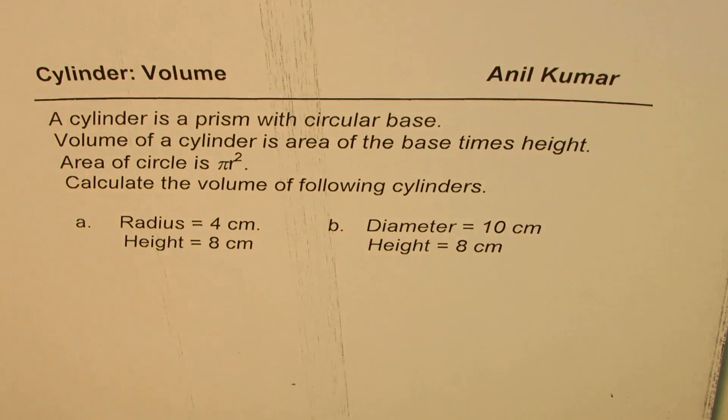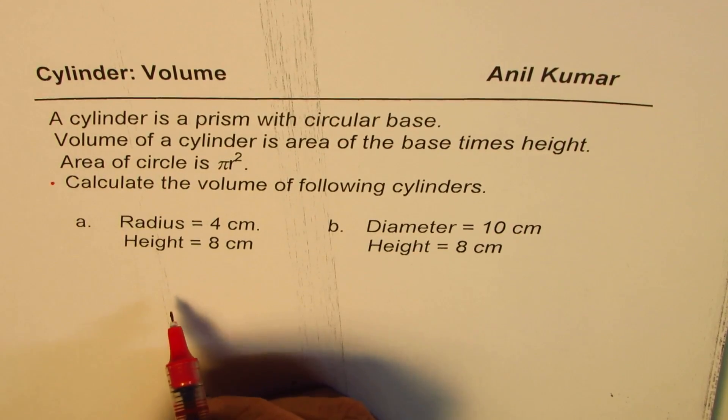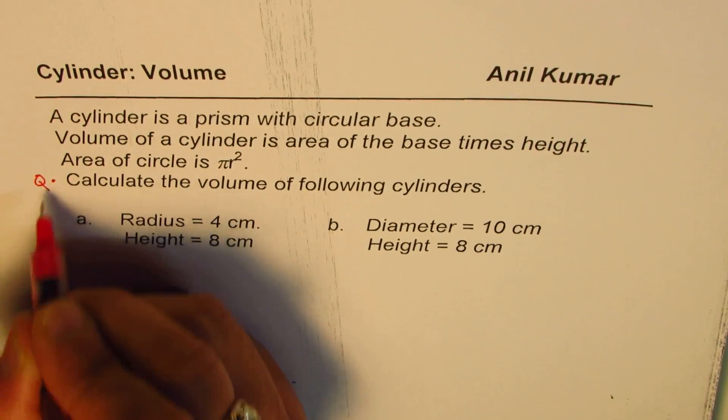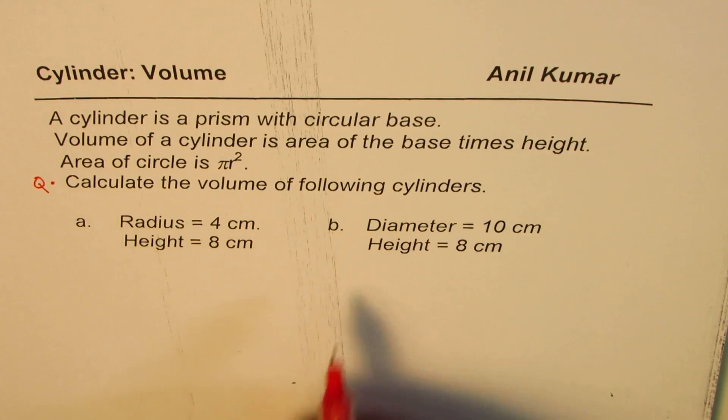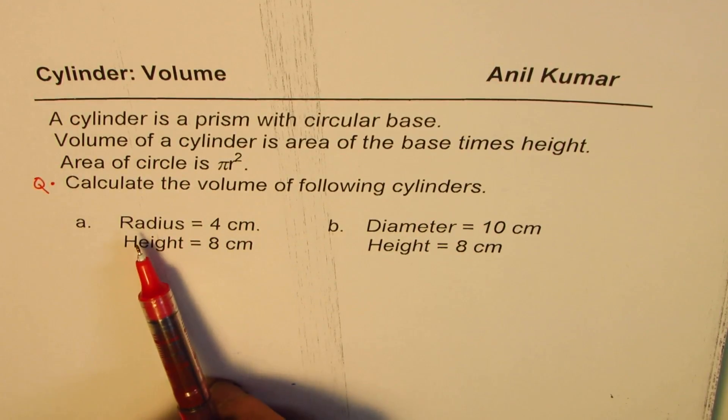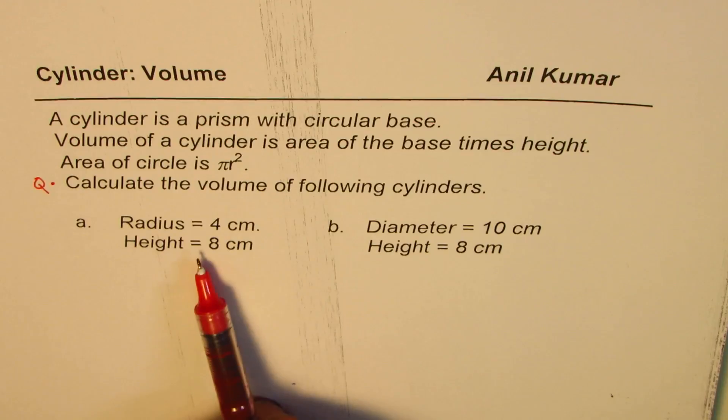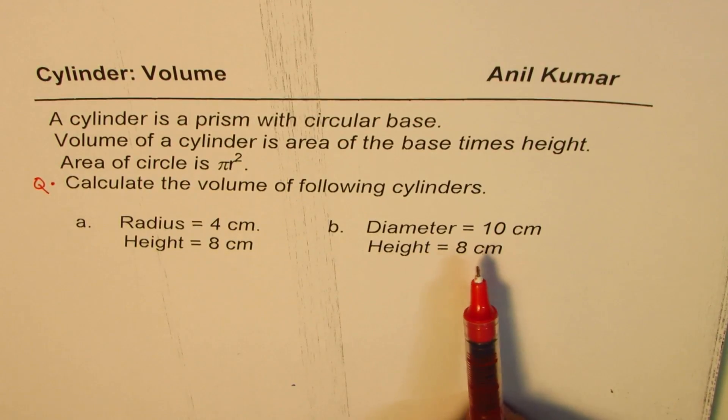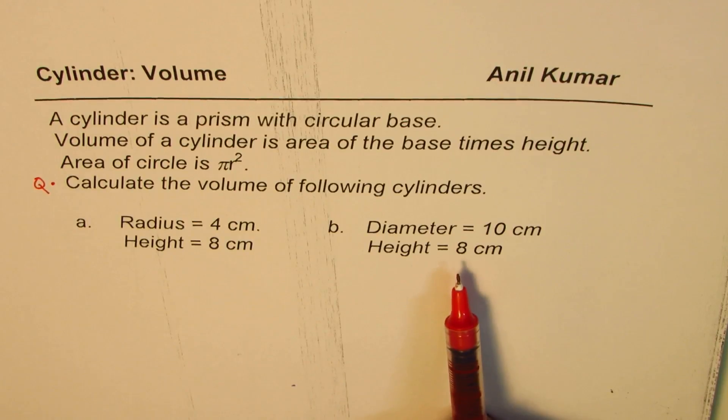And the question here is, calculate the volume of following cylinders. One with radius of 4 centimeters, height of 8 centimeters. The other one is diameter of 10 centimeters and height of 8 centimeters.